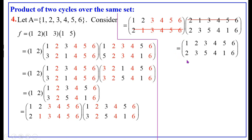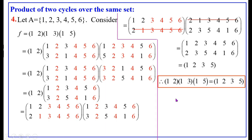We write this as a product of cycles again. 1 goes to 2, 2 goes to 3, 3 goes to 5, 5 goes to 1. Whereas 4 goes to 4 and 6 goes to 6 — they are identity permutations. Therefore the product of the cycles (1, 2)(1, 3)(1, 5) equals the cycle (1, 2, 3, 5). This is a very important point we are going to use while doing problems: the product (1, 2)(1, 3)(1, 5) gives (1, 2, 3, 5), that is 1→2, 2→3, 3→5.